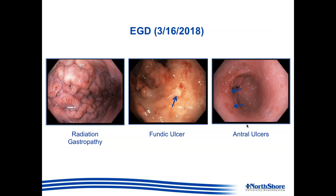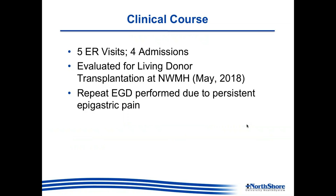At this point it was decided that the patient would be put on PPI therapy and as-needed carafate in order to facilitate healing of these ulcers. Unfortunately over the following two months the patient continued to have intermittent abdominal pains and had a very arduous course. She presented to the ER on five occasions between April and May of 2018, including instances where she had suffered episodes of melena. She was admitted to the hospital four times during this course.